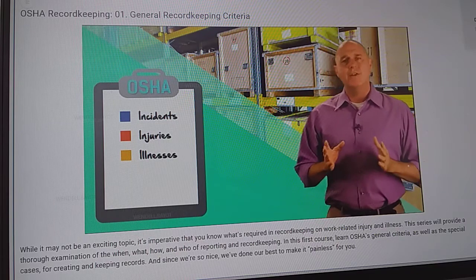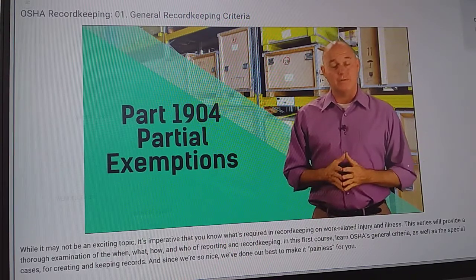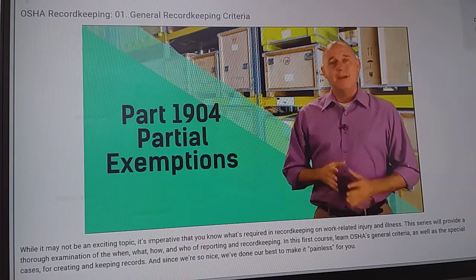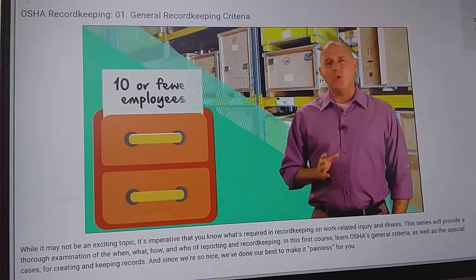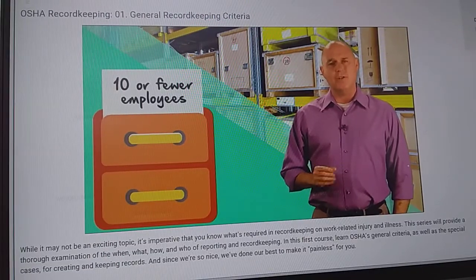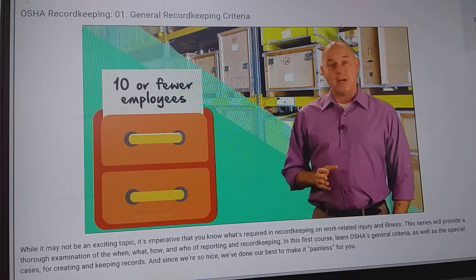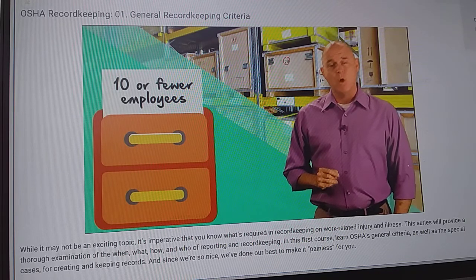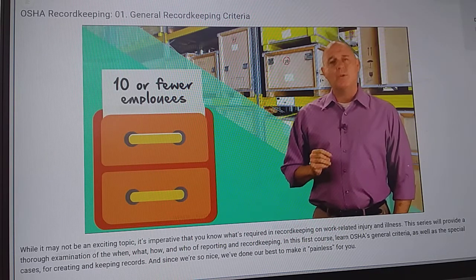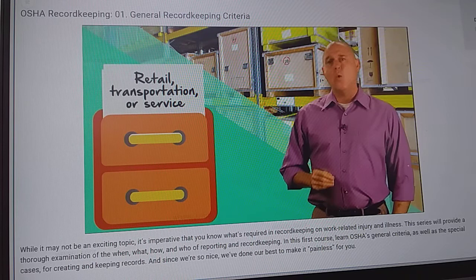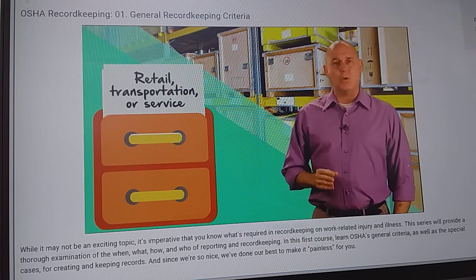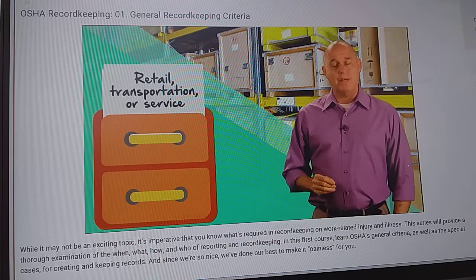There are some partial exemptions to Part 1904. Employers are not required to keep OSHA injury and illness records if they employ 10 or fewer employees at all times during the previous calendar year, or are in the retail, transportation, or service industries, or any other industry listed in Part 1904, Subpart B, Appendix A.